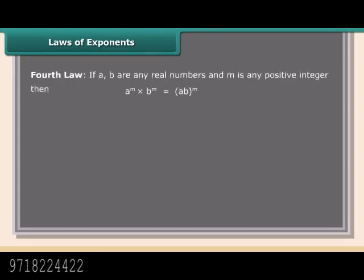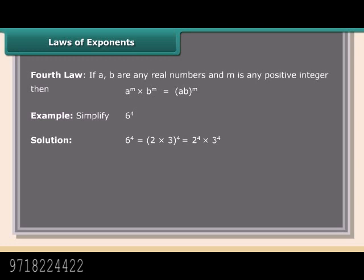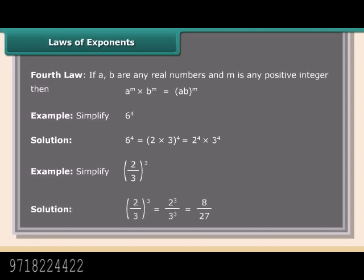Fourth law: If A, B are any real numbers and M is any positive integer, then A raised to the power M into B raised to the power M equals AB raised to the power M. Example: Simplify 6 raised to the power 4. Solution: 6 raised to the power 4 equals 2 into 3 raised to the power 4, which equals 2 raised to the power 4 into 3 raised to the power 4. Example: Simplify 2 upon 3 raised to the power 3. Solution: 2 raised to the power 3 upon 3 raised to the power 3, which equals 8 upon 27.